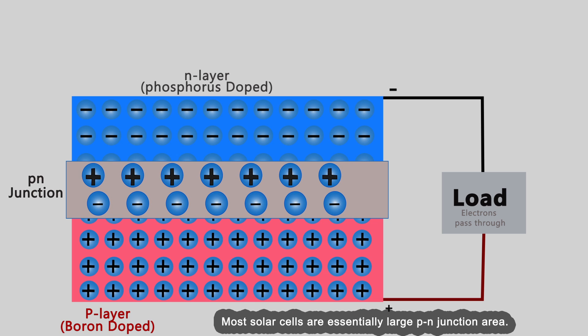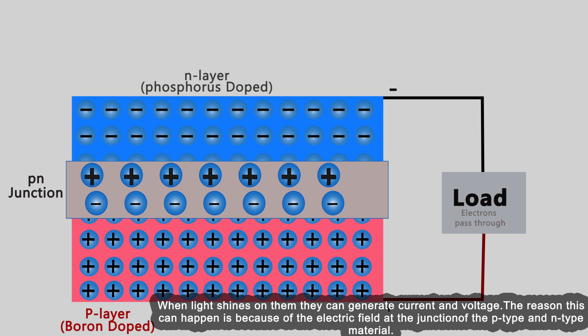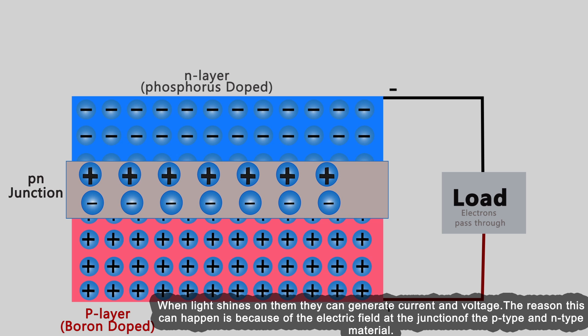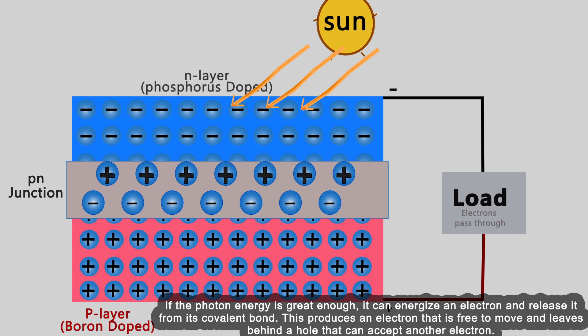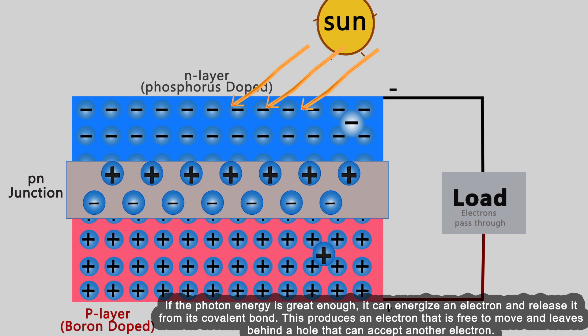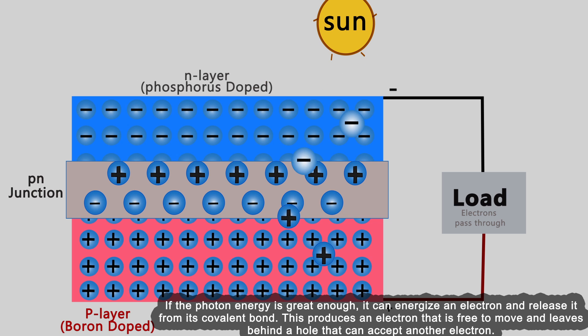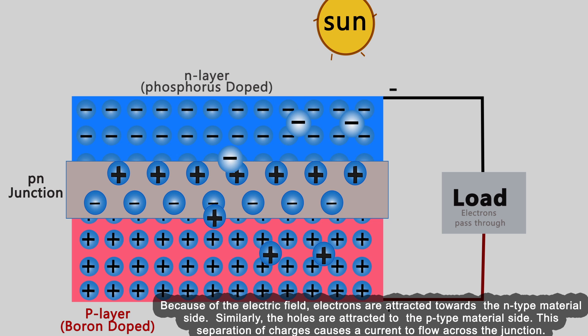When light shines on them, they can generate current and voltage. The reason this can happen is because of the electric field at the junction of the p-type and n-type material. If the photon energy is great enough, it can energize an electron and release it from its covalent bond. This produces an electron that is free to move and leaves behind a hole that can accept another electron.